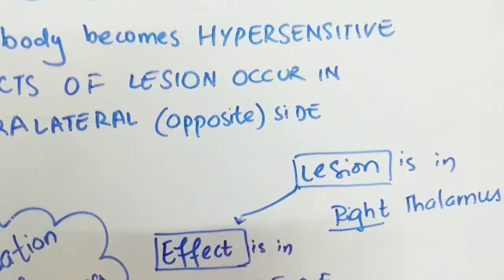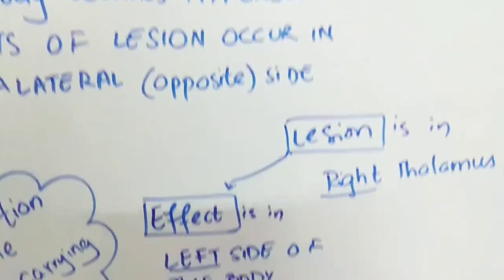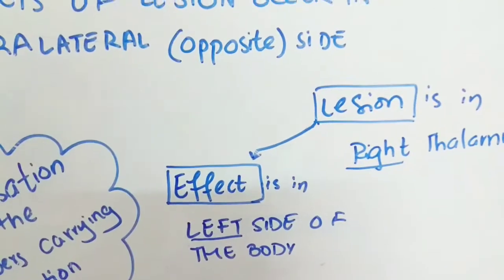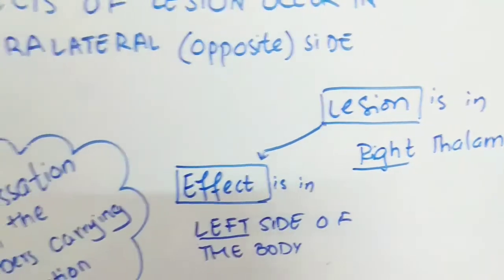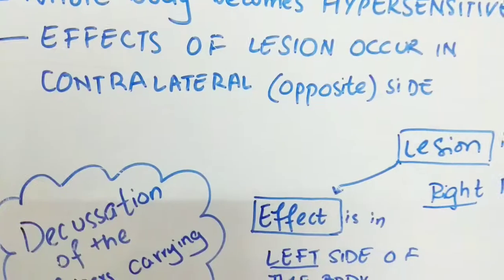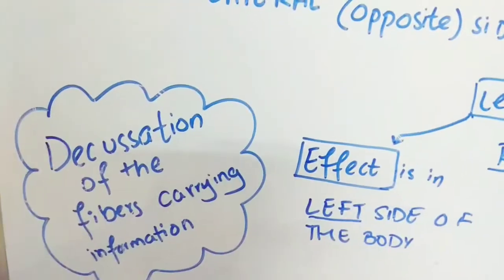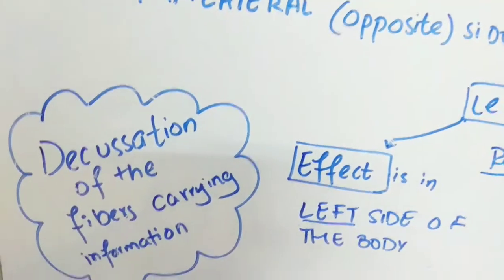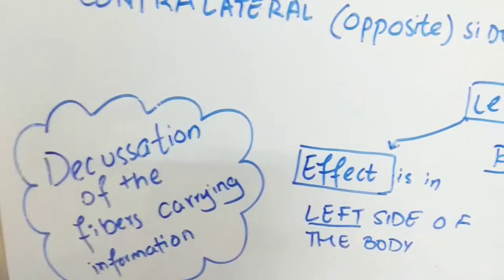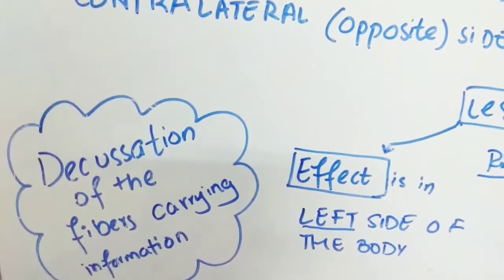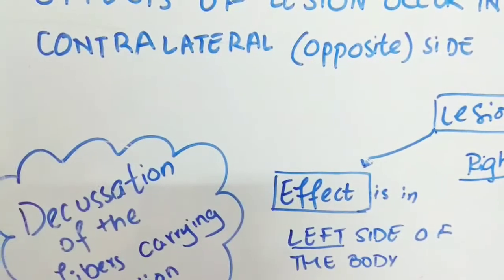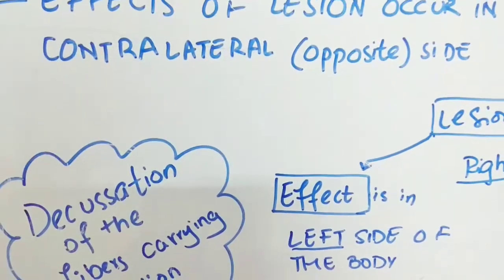For example, if the lesion is in the right thalamus, the effect is in the left side of the body. This contralateral effect is due to the decussation of the fibers carrying sensory information to the thalamus where it is processed. So due to the lesion, the effect is in the contralateral side.